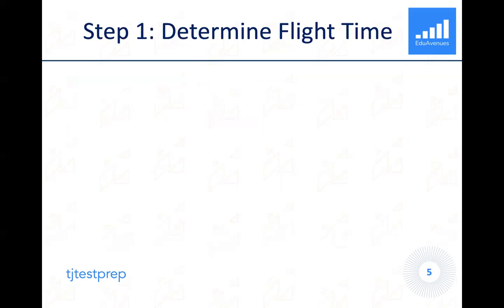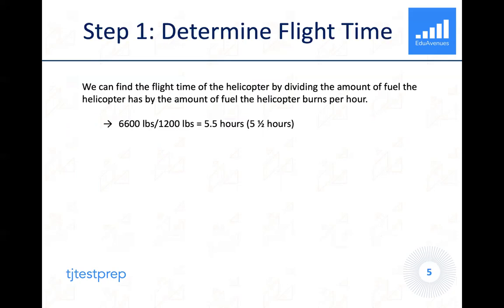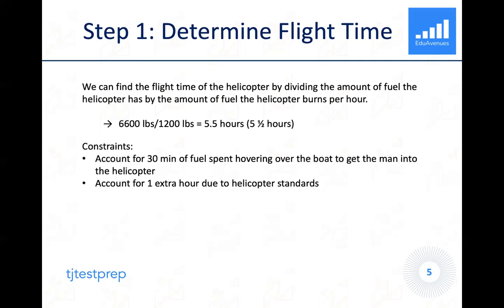Our first step is to determine the flight time. We find the flight time of the helicopter by dividing the amount of fuel by the burn rate per hour. The helicopter has 6,600 pounds of fuel and burns 1,200 pounds per hour, giving us 5.5 hours of flying time. However, we have to account for some constraints: 30 minutes set aside for hovering over the boat to retrieve the man, and one extra hour due to helicopter standards — a total of 1.5 hours to subtract.